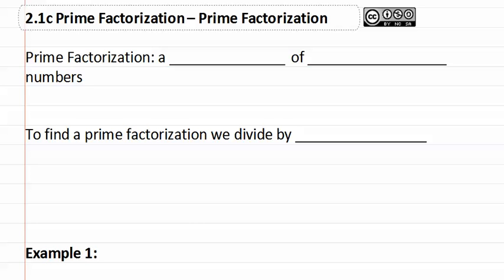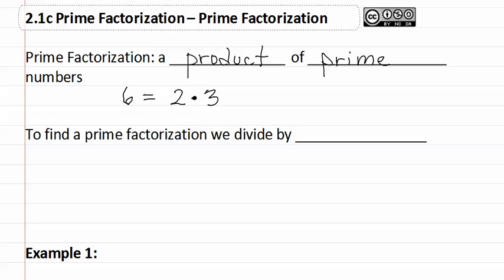2.1c: Prime factorization. Prime factorization is a product of prime numbers. This means that for the number six, its prime factorization would be two times three. Product just merely means multiplication of the prime numbers that make up the number that we are factoring. To find a prime factorization, we divide by prime numbers.